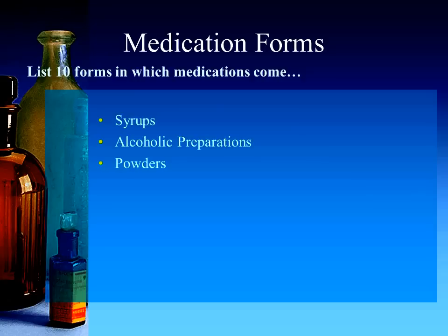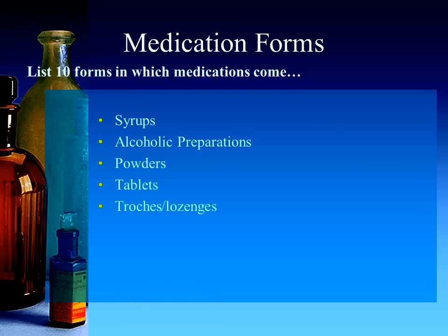Another form is powders — basically dried, crushed medications that can be reconstituted in a variety of ways. Tablets are another form; they are hard, compacted, dried medications that are swallowed whole. We usually encourage people to take them along with food or water. Lozenges, otherwise known as troches, are a way in which we give medications that allows the medication to dissolve in the oral cavity. You may have taken something similar as a cough drop or Cepacol lozenge, used for treating things such as a sore throat.